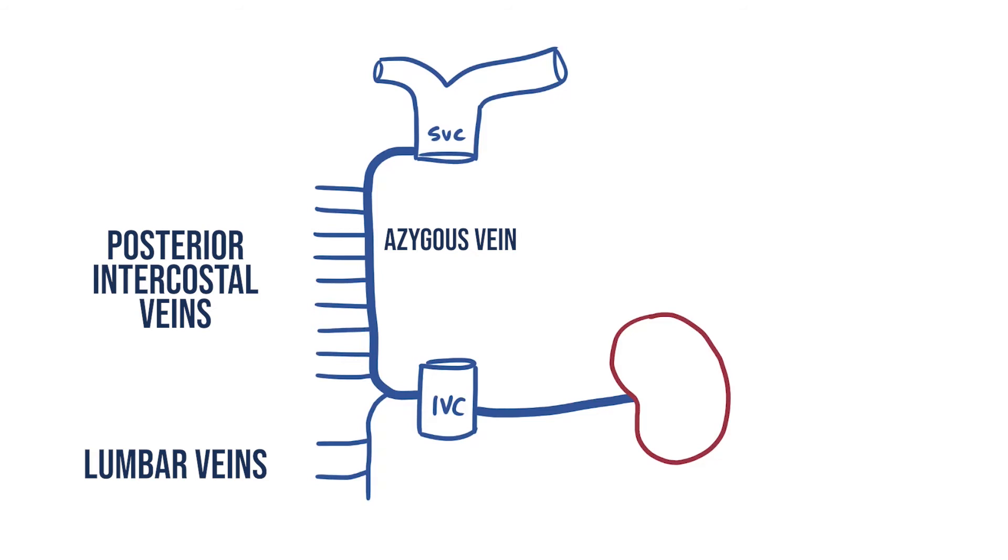Now because of the level it finishes at, the second, third and fourth intercostals form a superior intercostal vein that have to head inferiorly to join the azygos. Meanwhile the first intercostal vein drains directly into the left brachiocephalic instead.